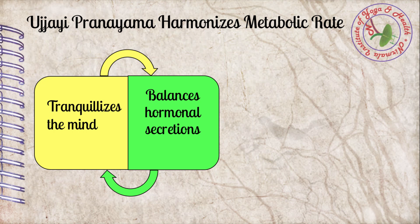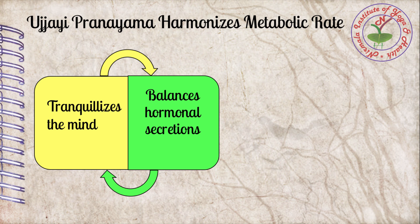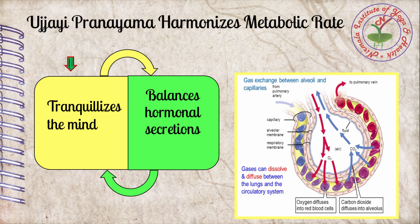Ujjayi pranayama harmonizes metabolic rate. It is a slow and deep breathing practice focusing on slight contraction at the back of the throat. The exact area of contraction is the subglottic larynx, which contains vocal cords and epiglottis. In general breathing, all inspired air does not respond to oxygenated blood in the alveoli.